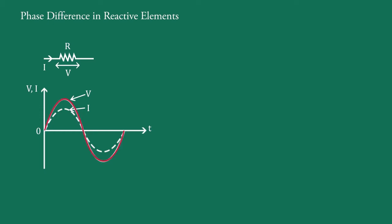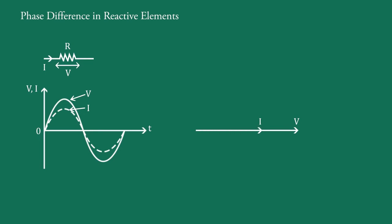This curve shows voltage and this curve shows current. Since current and voltage rise and fall simultaneously at all points, there is no phase difference between them — that means they are in phase with each other. So if we draw the phasor diagram for the voltage and current through the resistance, the two vectors are superimposed on each other.